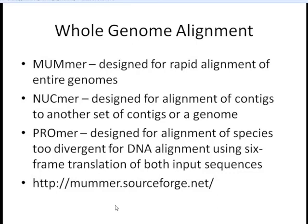Another specific scenario within sequence alignment is aligning a whole genome to another whole genome. For this, we have three different possible programs within MUMmer. We have MUMmer itself, which is designed for rapid alignment of entire genomes. We have NUCmer, which is designed for the alignment of contigs to another set of contigs or a whole genome. And then we have PROmer, which aligns on a protein level in six-frame translation, ideal for aligning whole genomes of two species that are too diverged for DNA alignment.